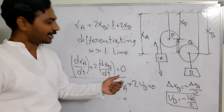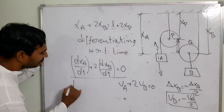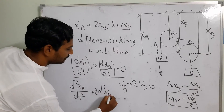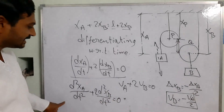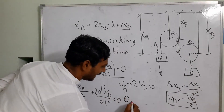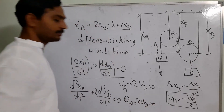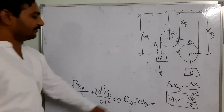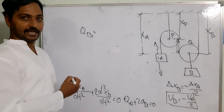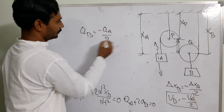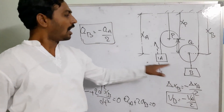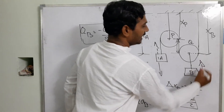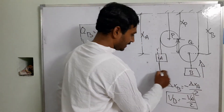Differentiating the velocity equation once more with respect to time to get the acceleration: d²XA/dt² + 2·d²XB/dt² = 0, which gives AA + 2·AB = 0. Simplifying: AB = −AA / 2. The acceleration of block B is half the acceleration of block A, and the negative sign indicates block B accelerates in the opposite direction — block B moves upward when block A moves downward.